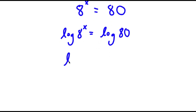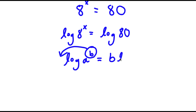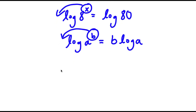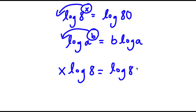Now, if I have something in the form log a to the power of b, I can move this exponent b to the front. So this is going to equal b times log a. So in this case, I have log a to the power of x, and I can move x to the front. So now I have x times log 8 is equal to log 80.